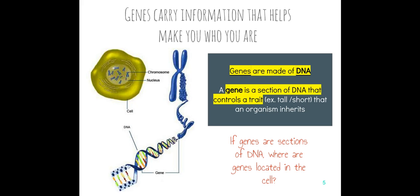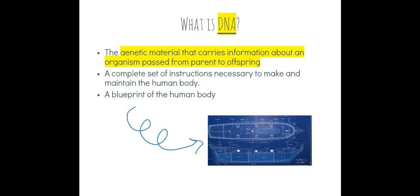Basically, genes carry information that helps make you who you are. Genes are made of DNA, and a gene is a section of DNA that controls the trait that you have. DNA is genetic material that carries information about an organism, passed from parent to offspring. It's like a set of blueprints for your body — it gives instructions for every single cell.